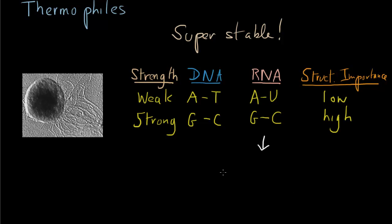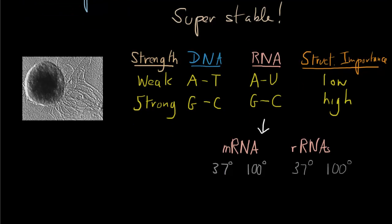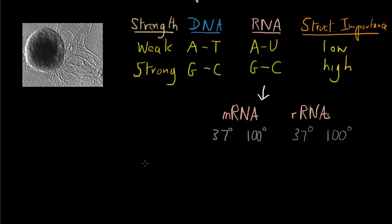This has implications for the stabilities of messenger RNAs and ribosomal RNAs as they occur in organisms growing at 37 degrees and at much higher temperatures. Both of these RNA species can be either relatively A-U rich or relatively G-C rich. For messenger RNAs in organisms which operate at normal temperatures, we sometimes find some which are A-U rich and some which are G-C rich.